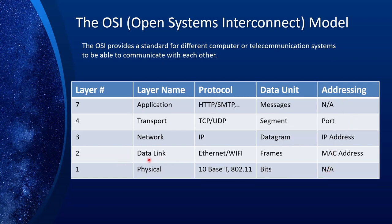Layer two is called the data link layer. The protocol is Ethernet, data units are frames, and addressing is MAC address. When you are in a local area network — when all computers are in the same broadcast domain connected to a switch — communications between them happen through Ethernet. But if a computer needs to talk to another computer in a different local area network or across the internet, we need another layer to facilitate that because Ethernet cannot go beyond a local area network. That's why we have the network layer, which ensures messages can travel from one LAN to another. The protocol is IP, the data unit is datagram, and the addressing is IP address.